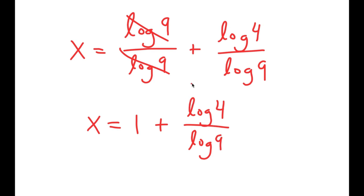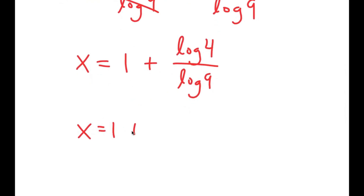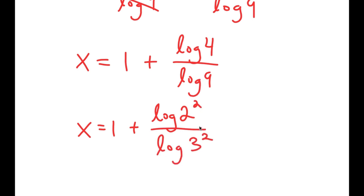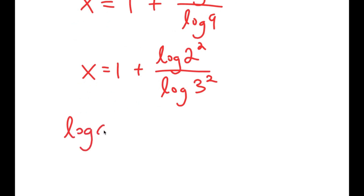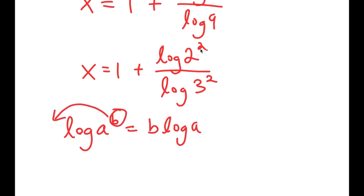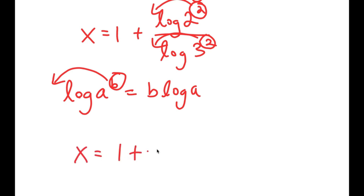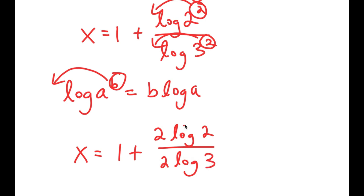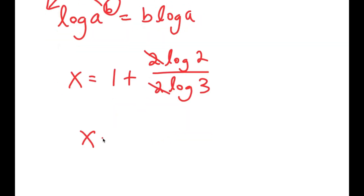From here, I'm going to simplify by rewriting log 4 as log of 2 squared, because 4 equals 2 squared. And I'll rewrite log 9 as log of 3 squared. Using the power property — log a to the power of b equals b times log a — I move each exponent to the front. So log 2 squared becomes 2 times log 2, and log 3 squared becomes 2 times log 3. So x equals 1 plus 2 times log 2 over 2 times log 3. The twos cancel, giving x equals 1 plus log 2 over log 3.